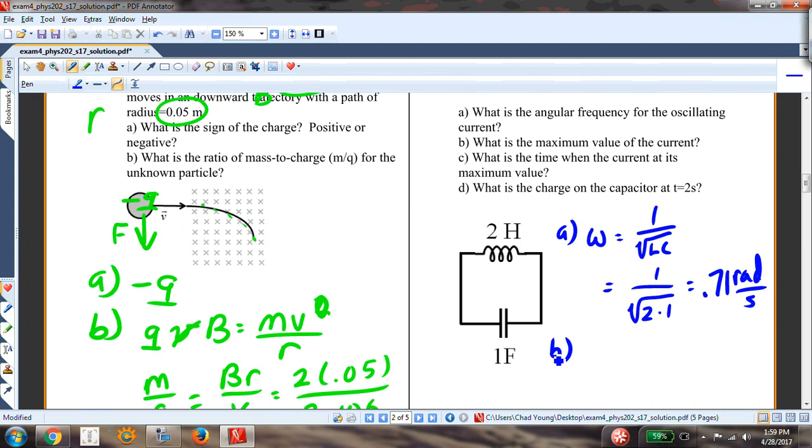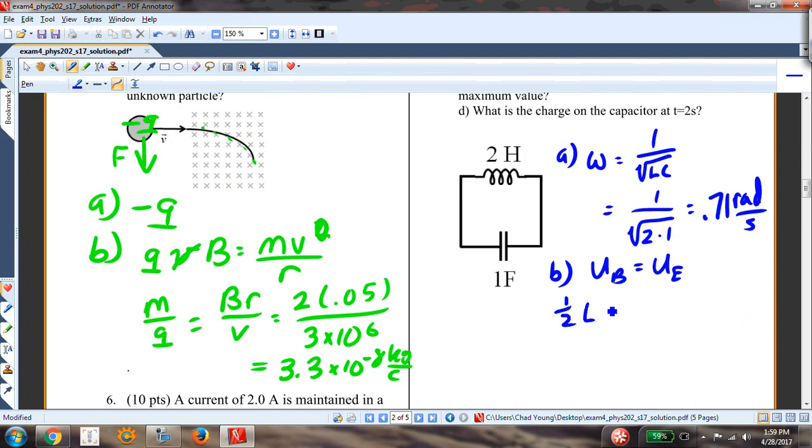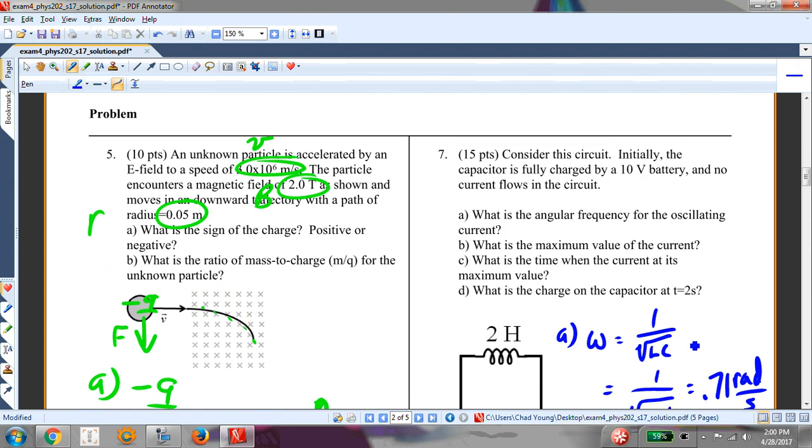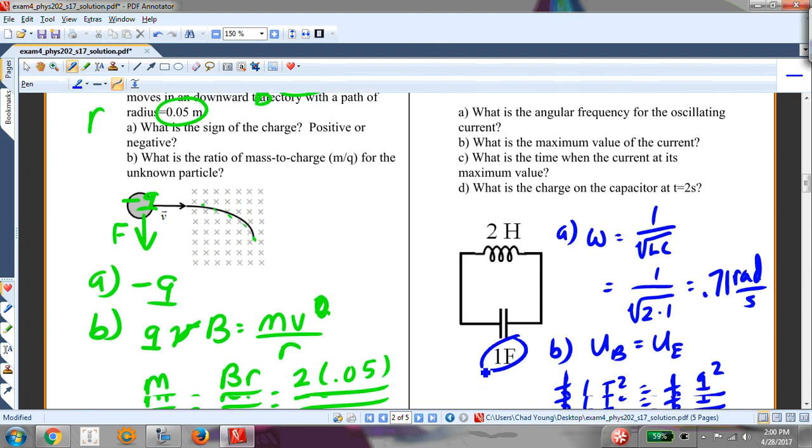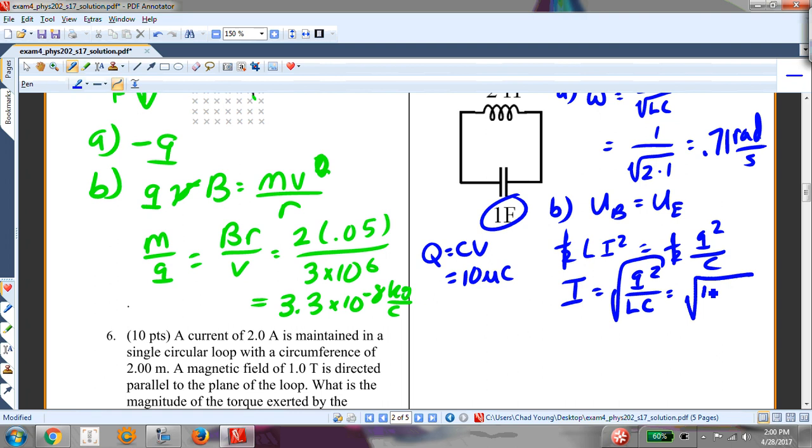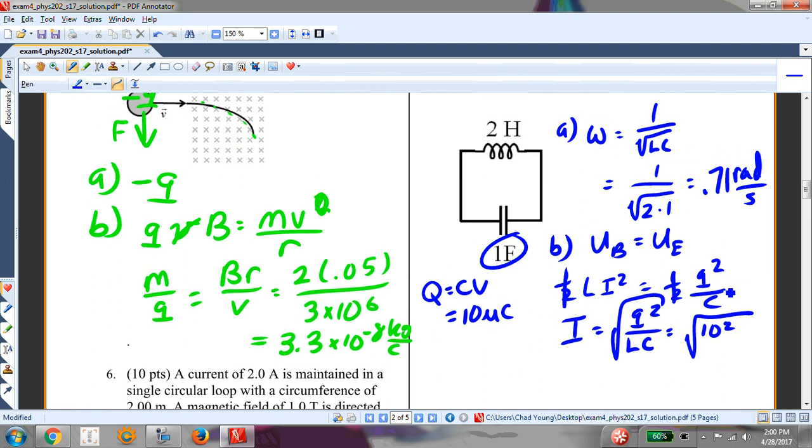And then in B, I want to know what is the maximum value of the current. Well, I know that the magnetic field energy is equal to the electric field energy. So I say 1 half Li squared is equal to 1 half Q squared over C. That is the maximum energy that's stored in the capacitor in the electric field is equal to the maximum energy that's stored in the inductor. Not at the same time, but they switch them back and forth. And so I can solve this for I. It would be Q squared over LC, square root of that. Q is 10 volts on 1 farad. So Q is equal to C times V or 10 microcoulombs. And so this is going to be the square root of 10 squared divided by L divided by C, divided by 2 times 1. That's the square root of 50, which is 7.1 amps.